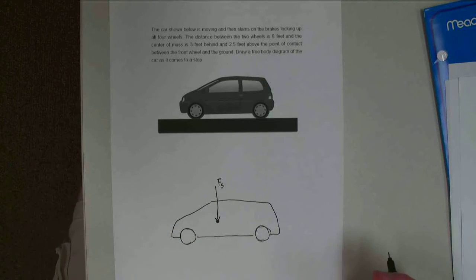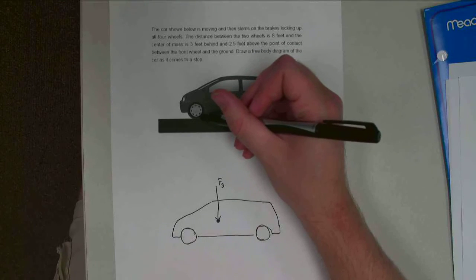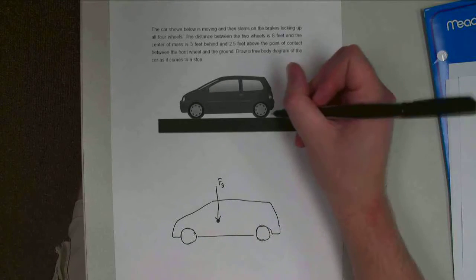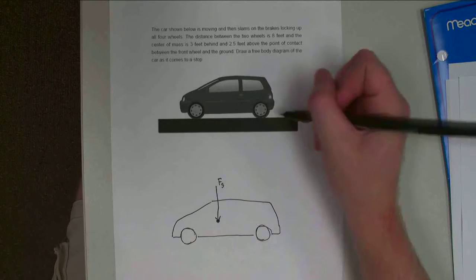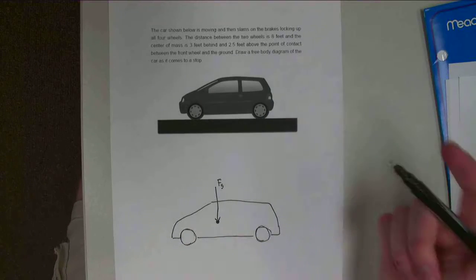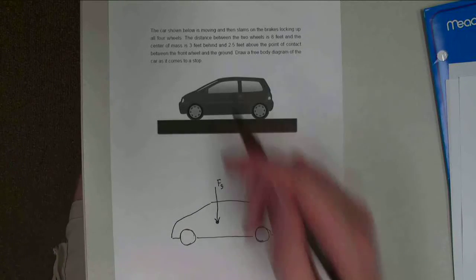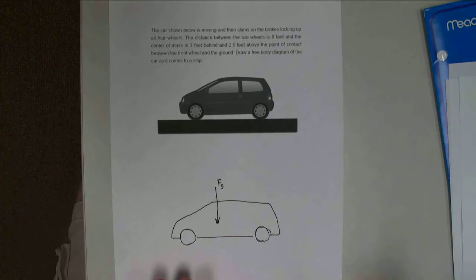Now I'm going to draw in reaction forces or normal forces at each of the two contact points. So the car is in contact up at the front and over here at the back. Technically, there'd be four contact points, one for each tire, but we reduce this to two wheels and a 2D problem.